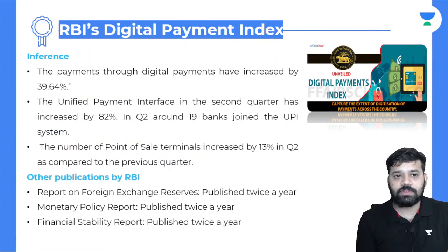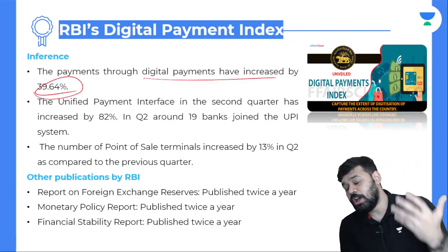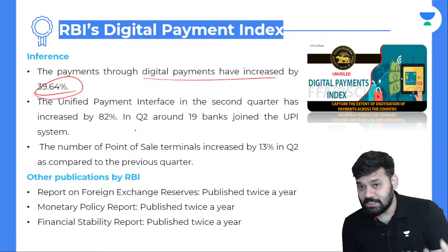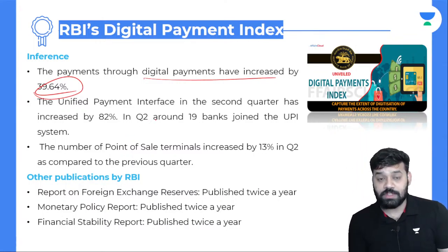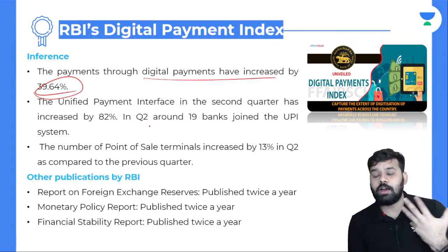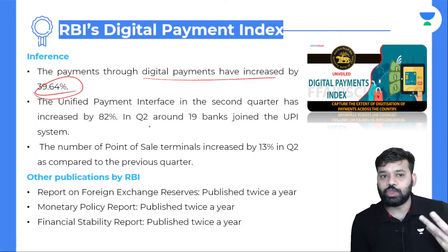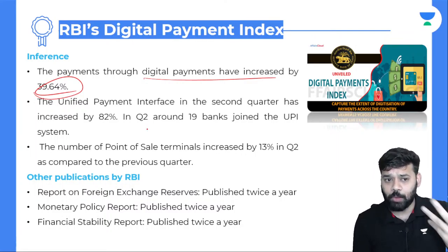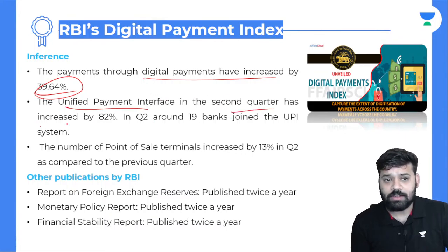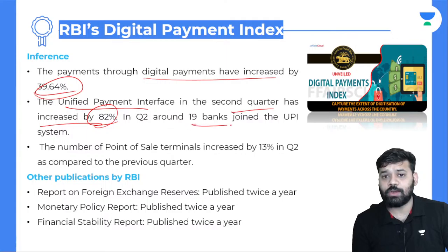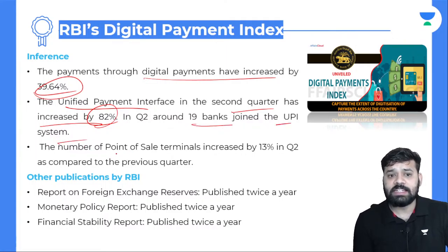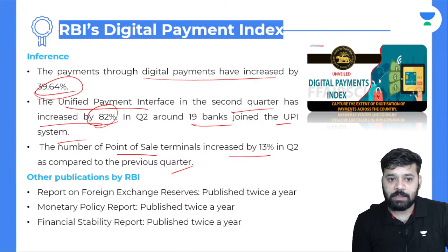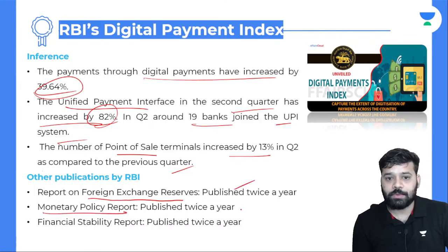The index is formulated based on five parameters: payment enablers 25%, consumer authenticity 5%, payment performance 45%, supply side factor 15%, and demand side factor 10%. Digital payments have increased by 39.64%. UPI — Unified Payment Interface — increased by 82% in the second quarter, with around 19 banks joining the UPI system. The number of point-of-sale terminals increased by 13%. Other RBI publications include: report on foreign exchange reserves — twice a year; monetary policy report — twice a year; financial stability report — twice a year; Inflation Expectation Survey of Households — four times a year; Consumer Confidence Survey — four times a year.